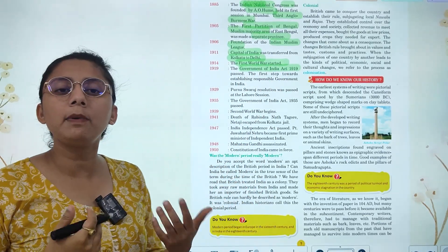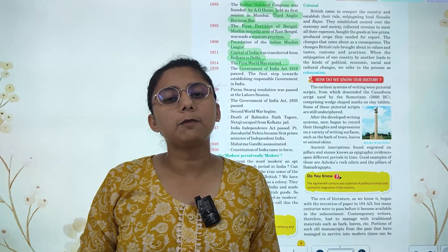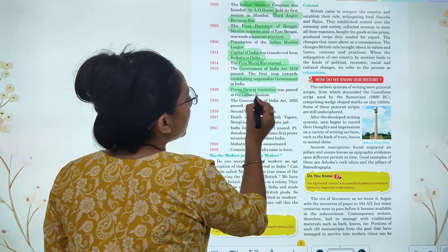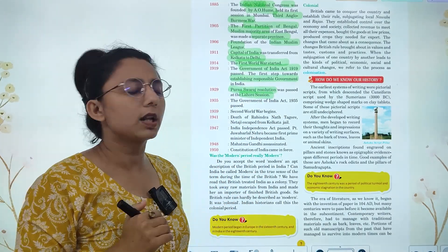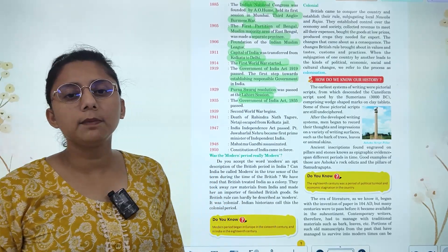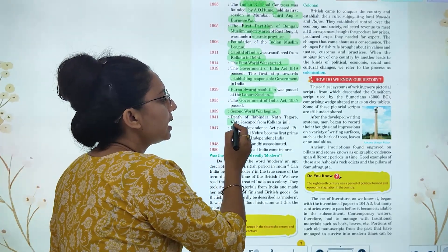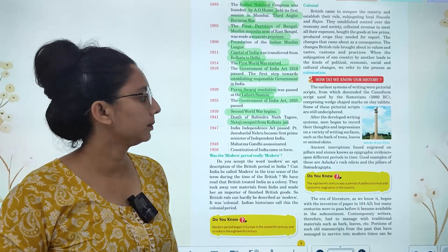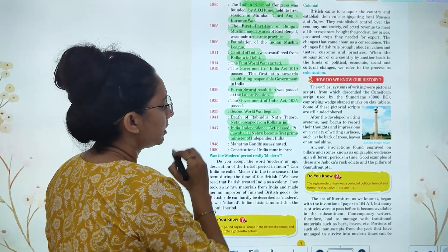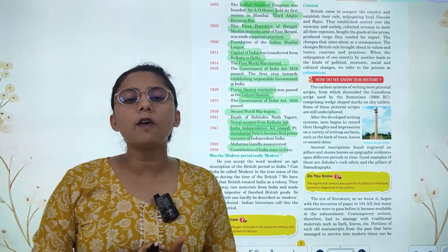The Government of India Act was passed, which was the first step towards establishing responsible government in India. In 1929, the Purna Swaraj resolution was passed at the Lahore session of the Congress. In 1935, the Government of India Act was passed. In 1939, the Second World War started. In 1941, Rabindranath Tagore died and Netaji escaped from Kolkata jail. In 1947, the Indian Independence Act was passed. In 1948, Gandhi Ji was assassinated. And in 1950, the Constitution of India was passed.